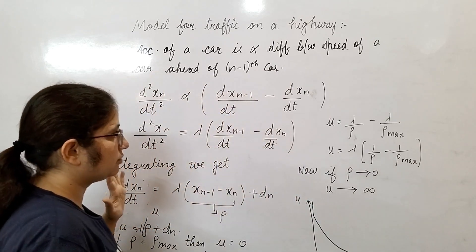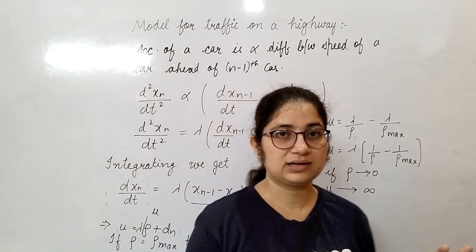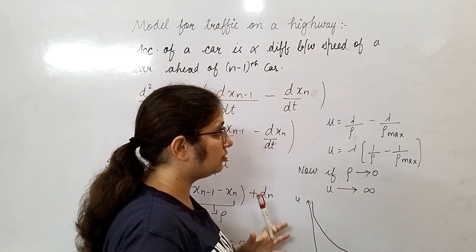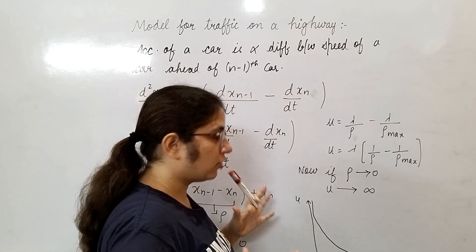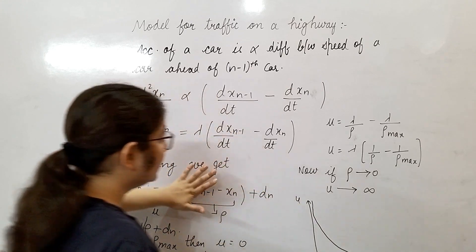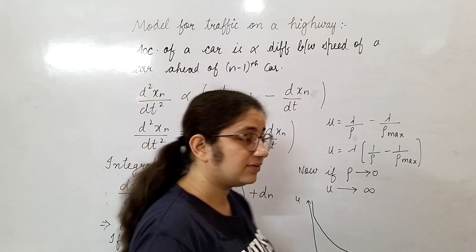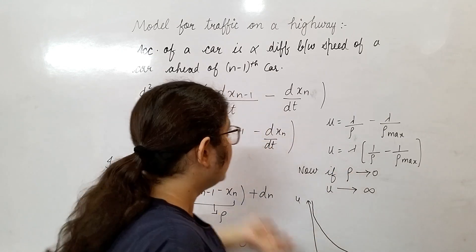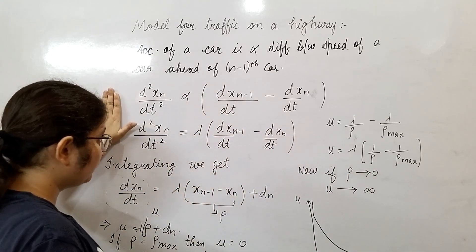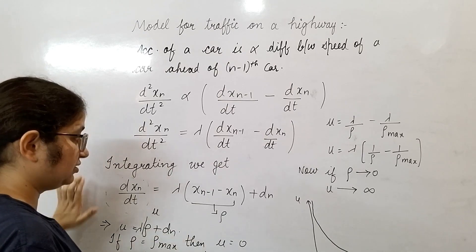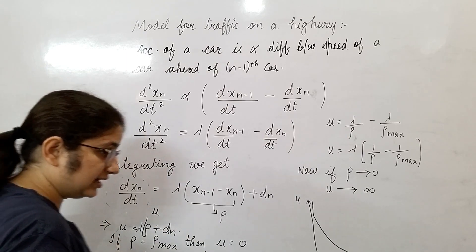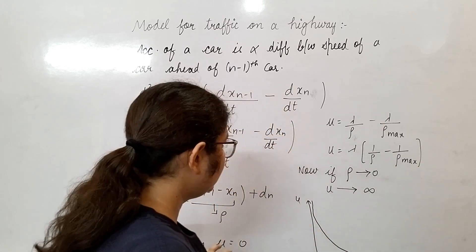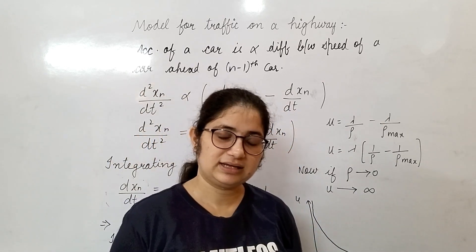It is not a difficult problem. In actual life, if you notice or start making observations, you can see that we face this problem every time. The derivation follows the same logic as we face in real life. Based on that, you have calculated the acceleration, then integrated it, and used the maximum or minimum limit as a boundary condition. If you have any doubt, you can comment. Thank you.